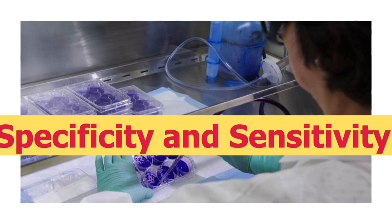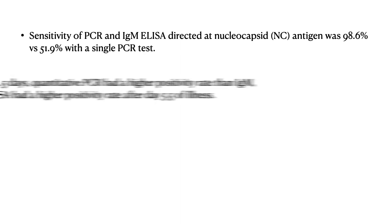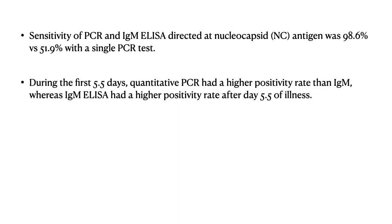Regarding sensitivity and specificity for antibody tests: the sensitivity of PCR combined with IgM ELISA directed at the nucleocapsid antigen is 98%, versus 51% with a single PCR test alone. This is especially important for patients presenting beyond the second week of illness, where the chances of getting an ELISA positive result are much greater than a PCR. During the first 5 to 6 days, quantitative PCR has a higher positivity rate than IgM antibody, but beyond 6 days the antibody test is more likely to be positive.